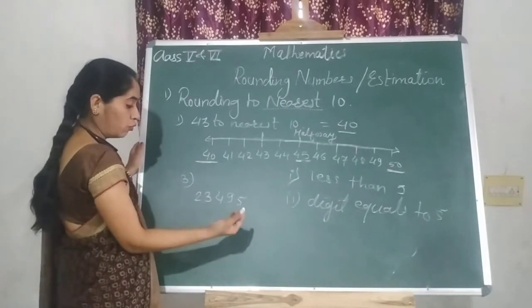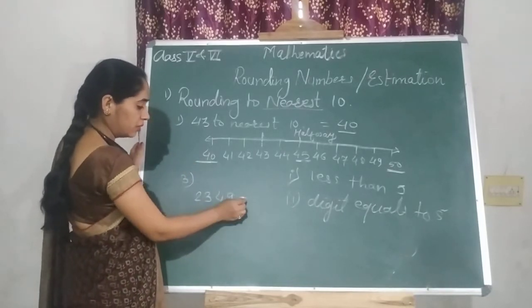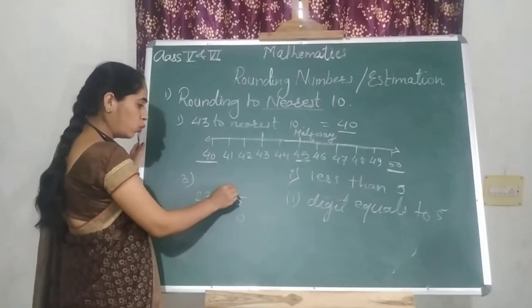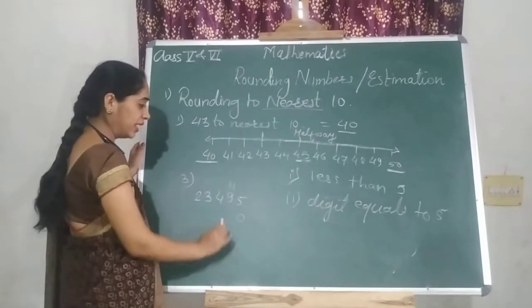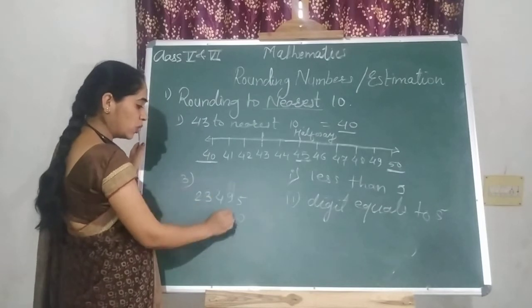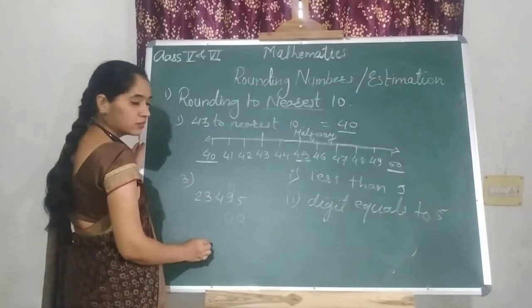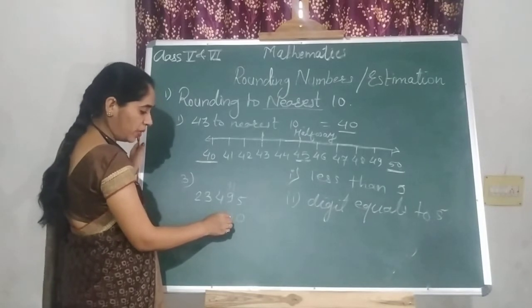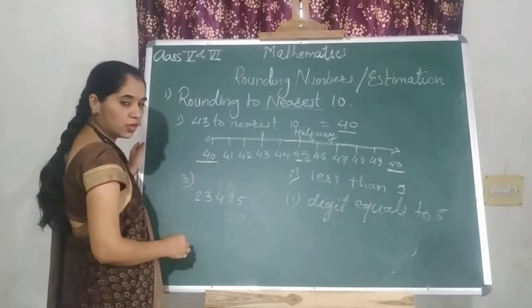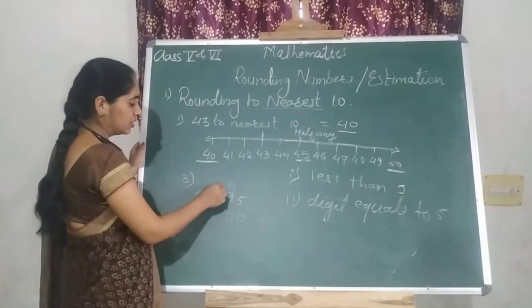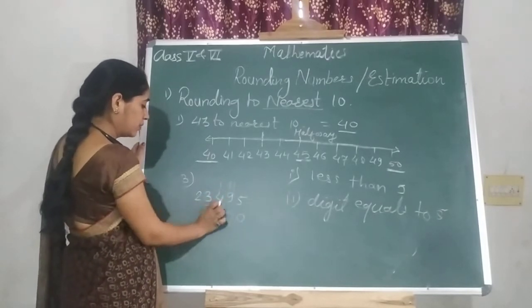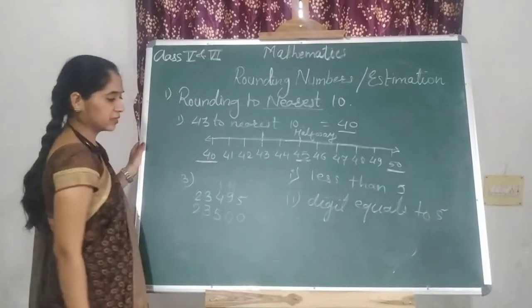So what we have to do? Here you will replace this 5 by 0. You will add 1 to its nearby place. But 9 plus 1 is 0 again, means 10. 9 plus 1 is 10. I am keeping 0 and taking 1 to 4 as a carry. Then 4 plus 1 is 5, and this 23 as it is. Clear?